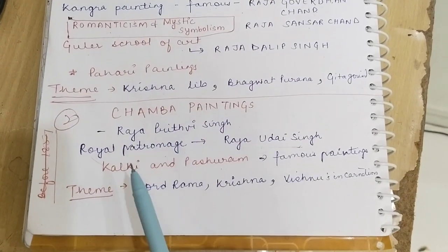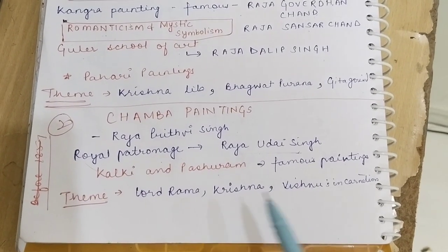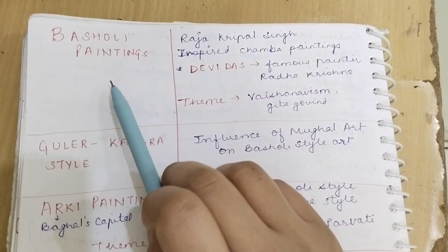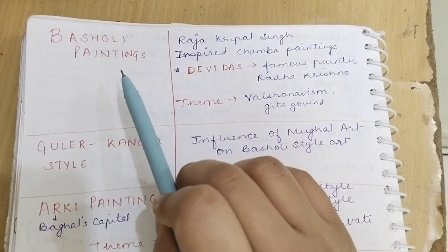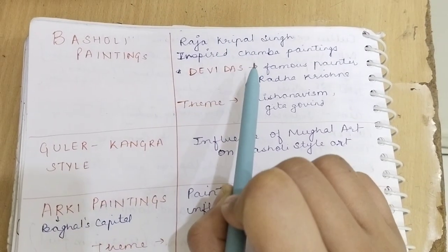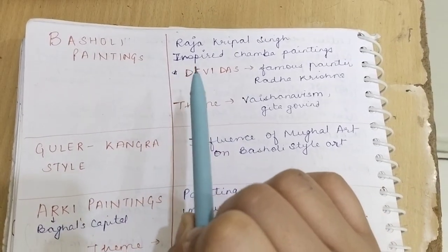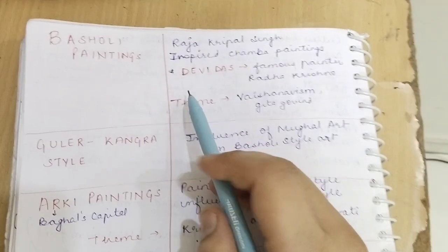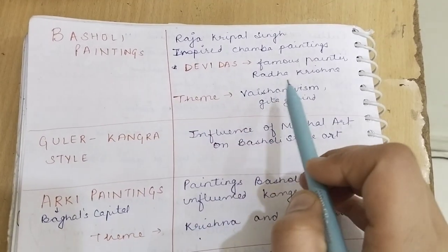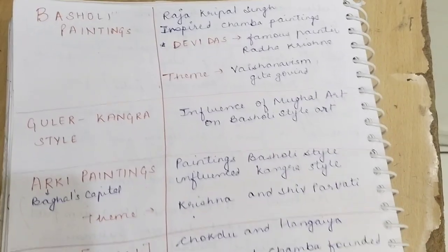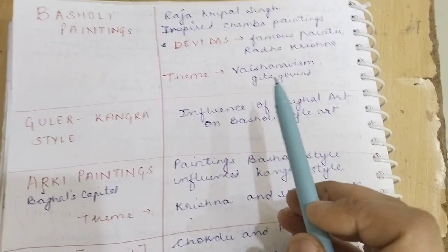The theme of Raja Kripal Singh's famous painting features Lord Rama and Krishna Ji. He inspired the Basholi school of painting. Devidas, who is a famous painter in Raja Prithvi Singh's period, appeared in paintings with the theme of Vaishnavism — the devotion to Lord Vishnu.